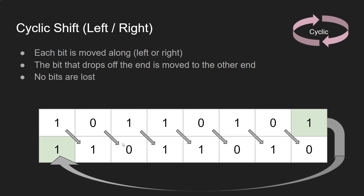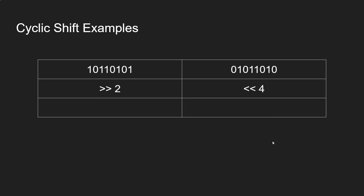Let's do an example. You can see the bit has been passed into the end. Here are two examples: one is a cyclic shift to the right by two, and the other is a cyclic shift to the left by two. In the right shift example, all the bits move along and the two bits on the right wrap around to the left. In the left shift example, the four bits on the left come out and go onto the right hand side.